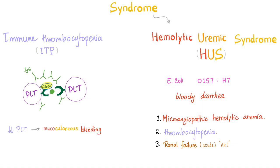Enterohemorrhagic E. coli produces a shiga-like toxin and is the O157:H7 strain of E. coli. It produces bloody diarrhea — that makes sense. But why does it cause microangiopathic hemolytic anemia, thrombocytopenia, and renal failure? It doesn't make sense, and that's why it's called a syndrome — just like Down syndrome, where trisomy 21 leads to stunted growth, short neck, bent fifth fingertip, single transverse palmar crease, and flat head. No clear reason — that's why it's a syndrome.